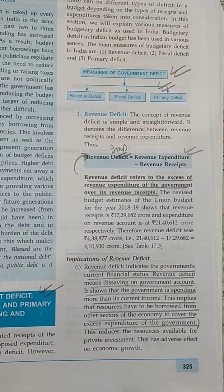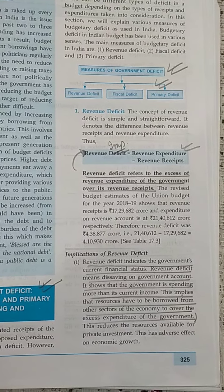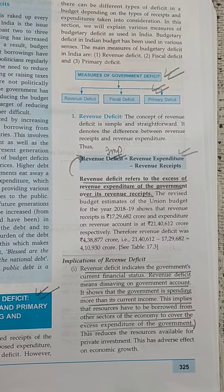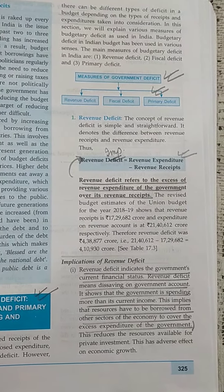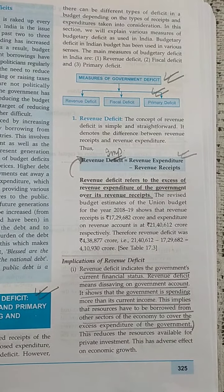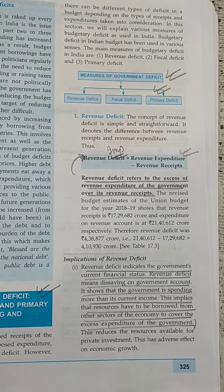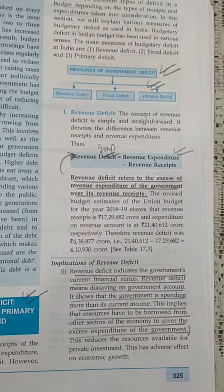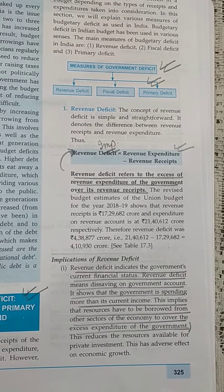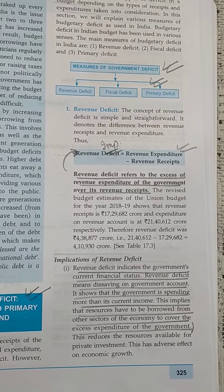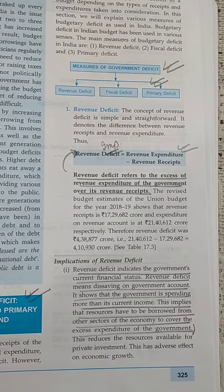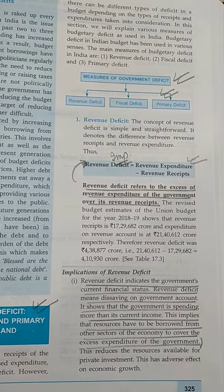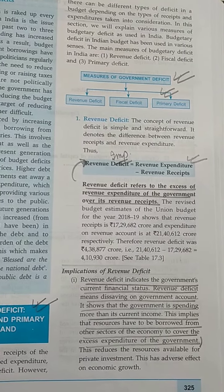Good morning students. We ended the last module on measures of government deficit. There are three categories: revenue deficit, fiscal deficit, and primary deficit. Today we are going to do them in detail. Revenue deficit is the difference between revenue receipt and revenue expenditure. A deficit happens when expenditure is more and receipt is less.